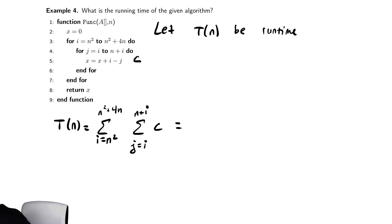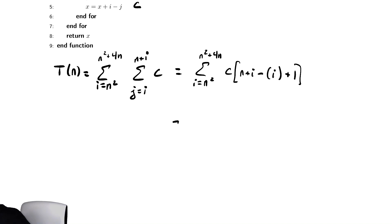So this is equal to the sum from i equals n squared to n squared plus 4n of c times the number of terms. The number of terms here is the top bound minus the bottom bound plus 1. Notice something nice is going to happen here. The i and the minus i cancel out. So this is equal to the sum from i equals n squared to n squared plus 4n, and i minus i cancel. And we have c times n plus 1.